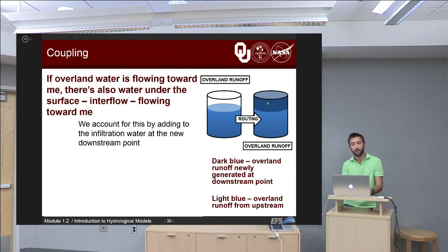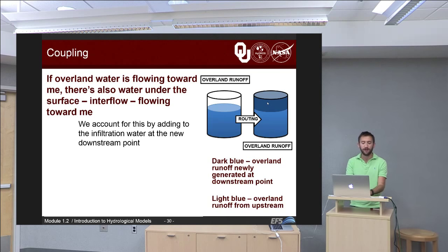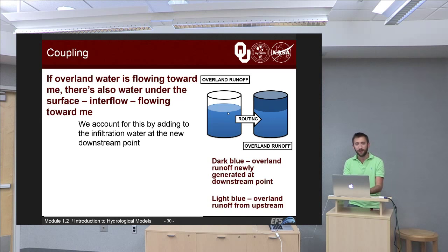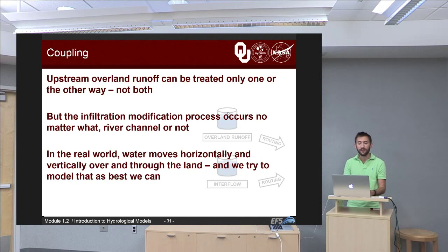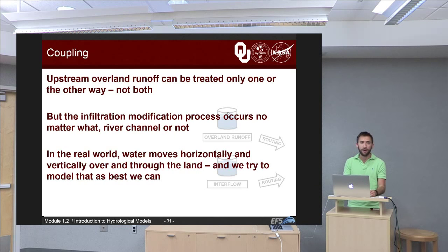If overland water is flowing toward me, there's probably also interflow — water under the surface — flowing toward me as well. We account for that by adding new infiltration water at the downstream point. The light blue is the overland runoff; after routing, the dark blue is newly generated overland runoff at that downstream point. The infiltration part occurs no matter what — river channel or not. In the real world, water is always moving horizontally and vertically over and through the land at all times and at all points, and we're trying to model that as best we can.